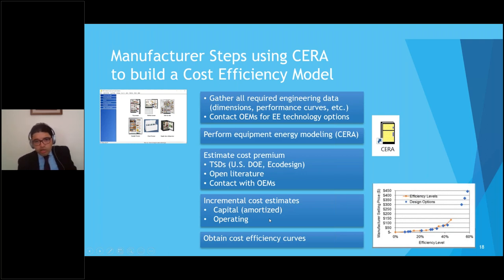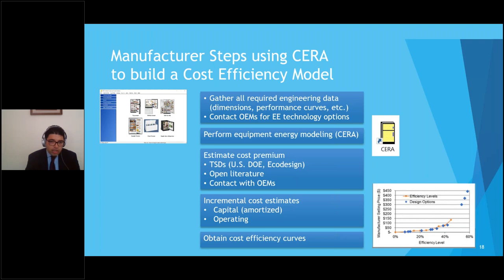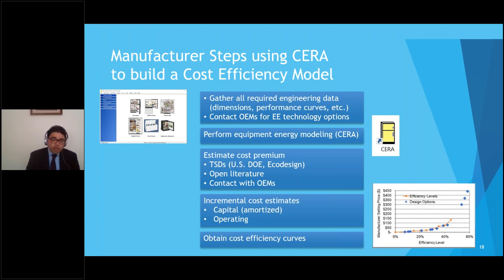In terms of incremental cost estimates, we differentiate capital costs and operating costs. For example, modifying thermal insulation thickness requires creating new injection molds and changing the metal cabinet siding — a significant capital cost that must be amortized. For foam insulation, operating costs include using more foam material. Moving from HFC-134A to isobutane involves capital costs for safety equipment and charging machines, but also operating cost savings on refrigerant, offset by needing more trained technicians and higher insurance premiums. These factors all need to be accounted for.